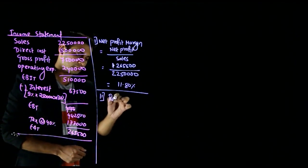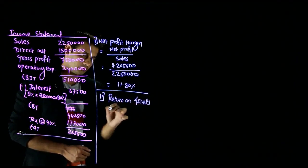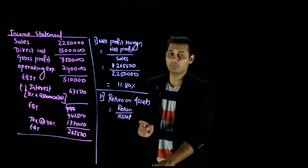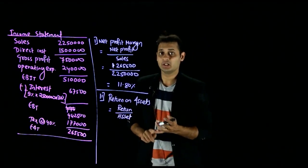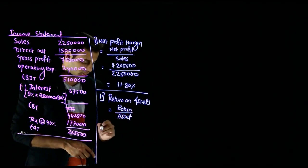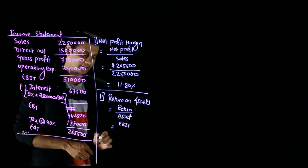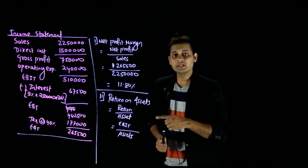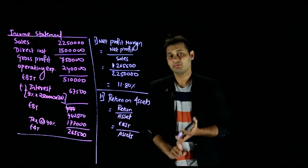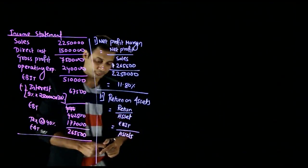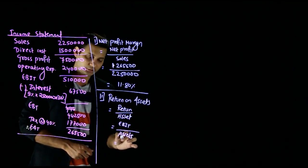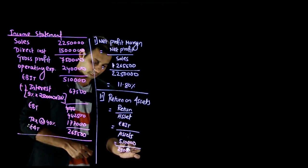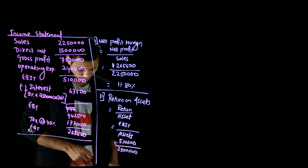Return on asset: EBIT divided by total assets. Since both debt and equity holders have invested in the 25 lakh rupees of assets, we use EBIT in the numerator. So 5,10,000 divided by 25 lakh equals 20.4%.